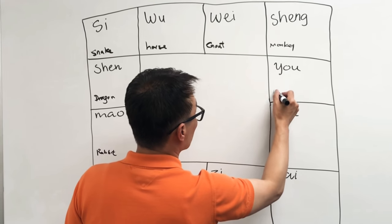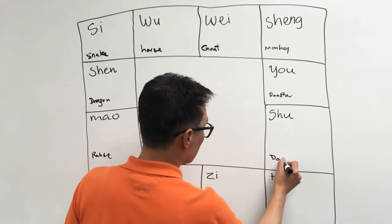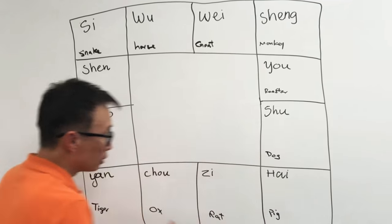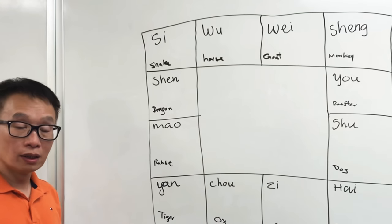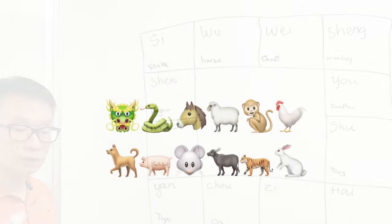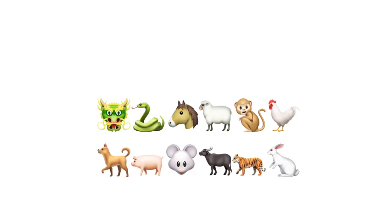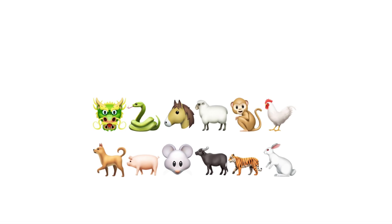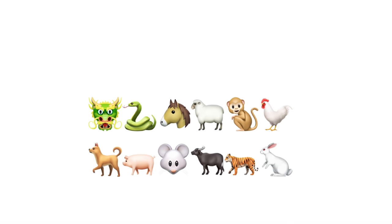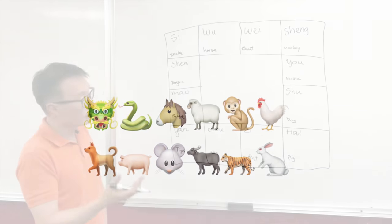Then horse, goat, monkey, and over here is the rooster and the dog, like this year, the year of the dog, and then the pig. So there are twelve houses.